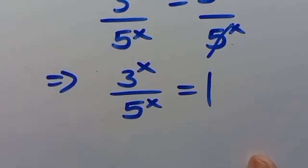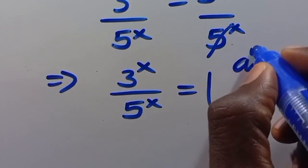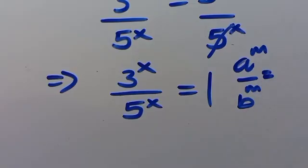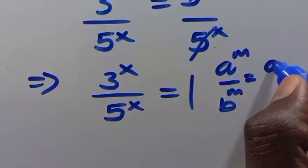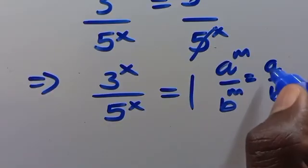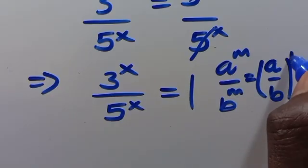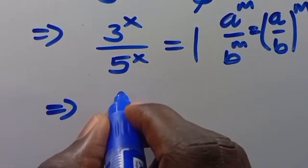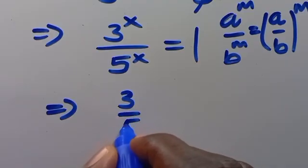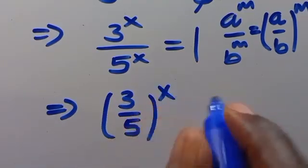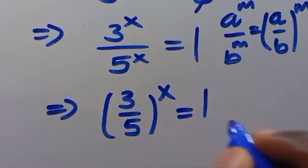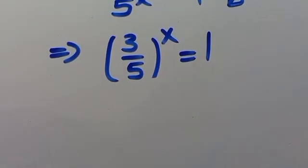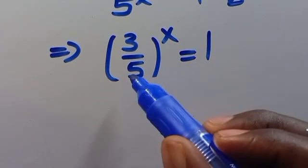Therefore, from the law of indices, when we have a to the power of m over b to the power of m, this can be written as (a over b) to the power of m. So from here, we have (2 over 5) to the power of x equals 1.